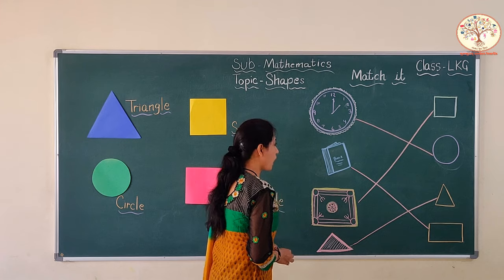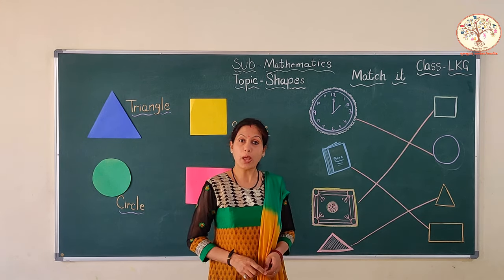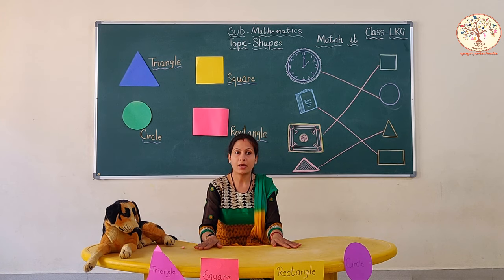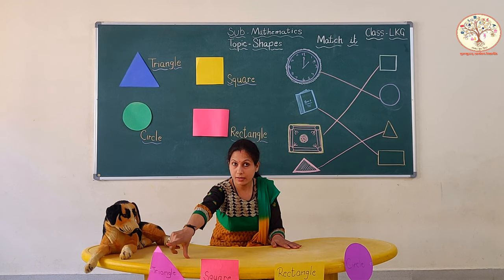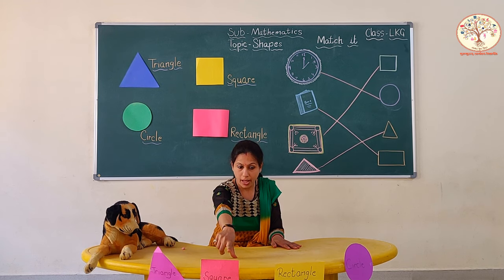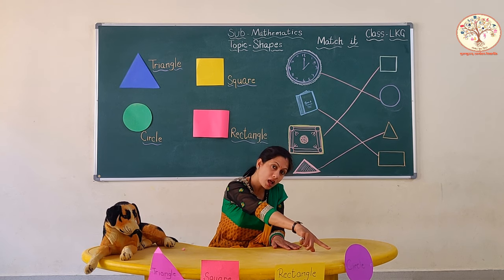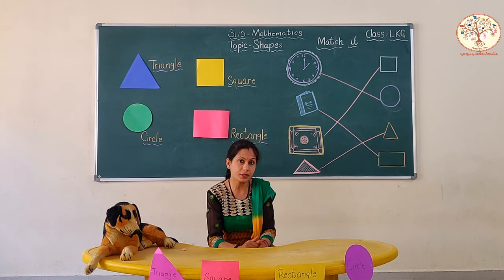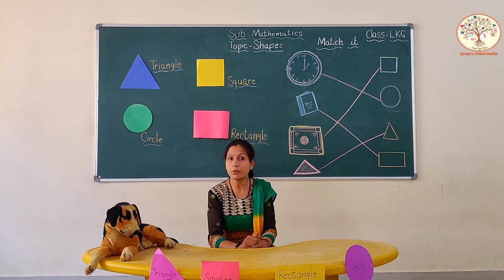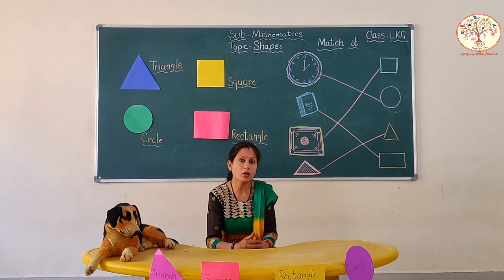Very good. Now, you can recognize the shape. So, now we will do an interesting activity. Kids, here I have four houses that are triangle, square, rectangle, and circle. I will show you some objects of different kinds and you have to recognize them and tell me from which house they belong.